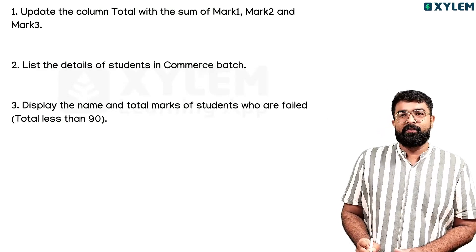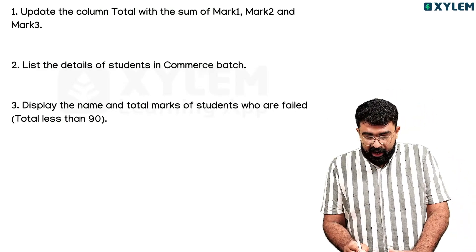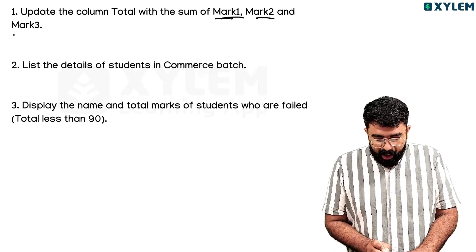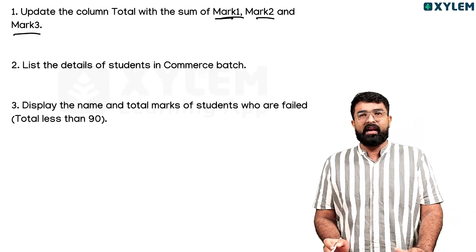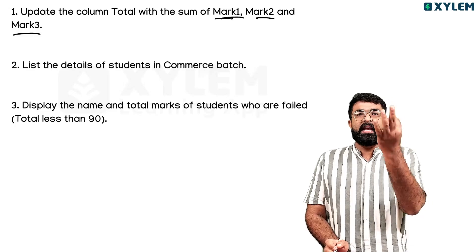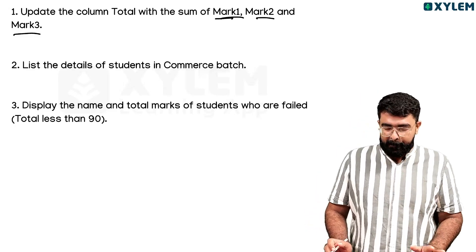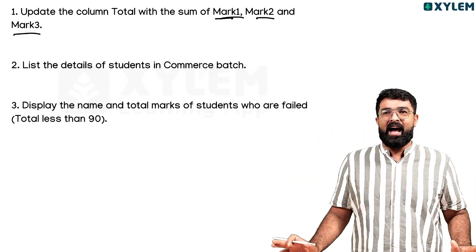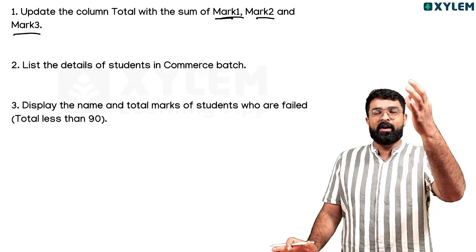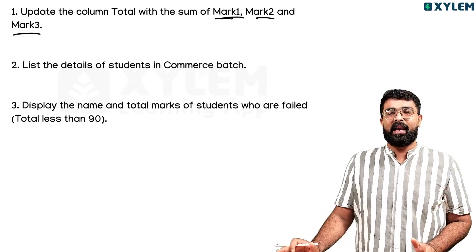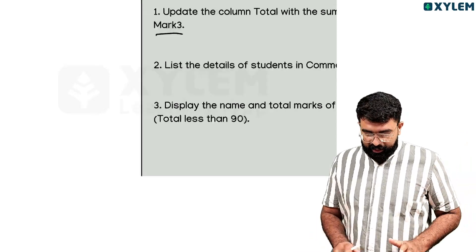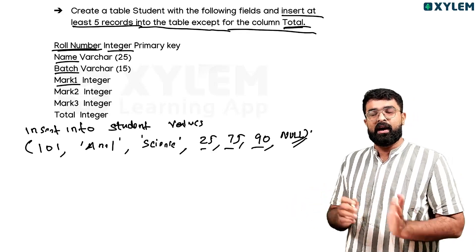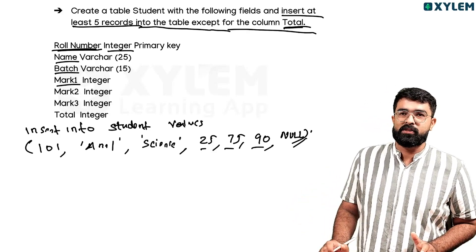First, update the column total with the sum of mark1 plus mark2 plus mark3. We have total equal to the sum of mark1 and mark2 and mark3. So the total is mark1 + mark2 + mark3.